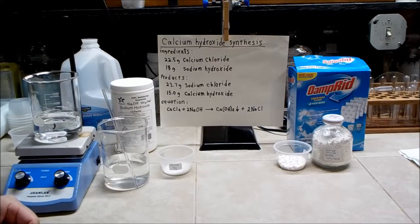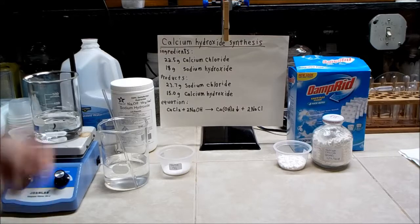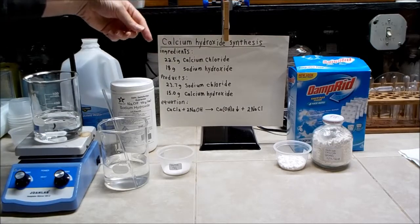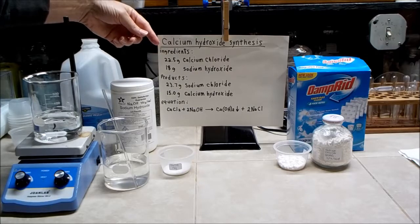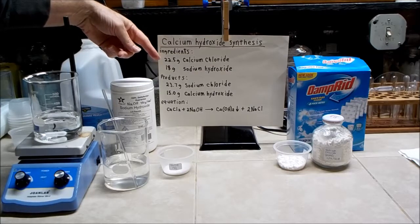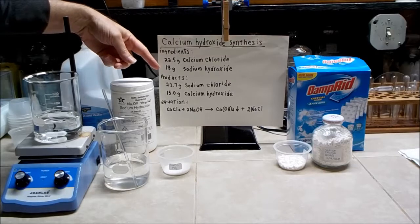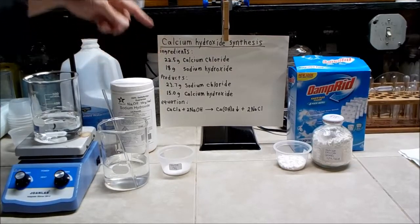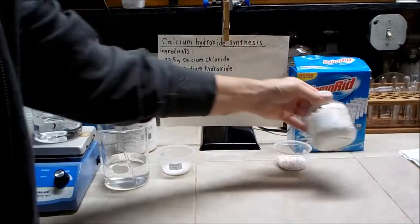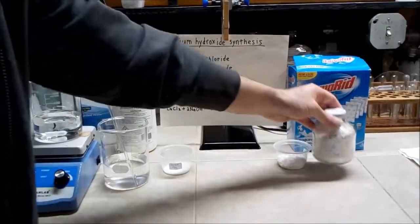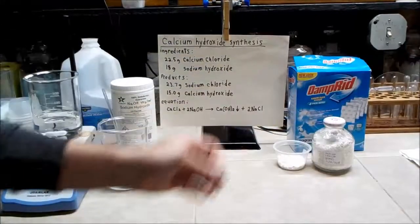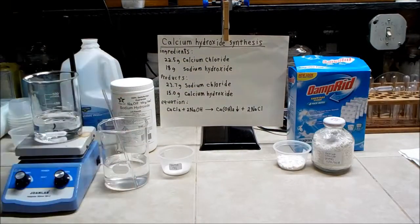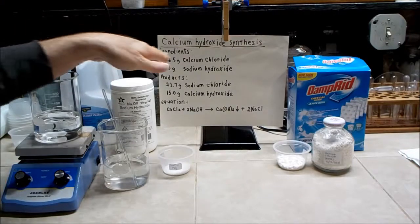Okay, so here's the setup and here this explains what I'm going to do. The ingredients are 22 and a half grams of calcium chloride and 18 grams of sodium hydroxide. Now the calcium chloride that I'm going to be using is anhydrous, and if your calcium chloride is not anhydrous, you'll have to take into consideration how much water is included and adjust the amount accordingly.